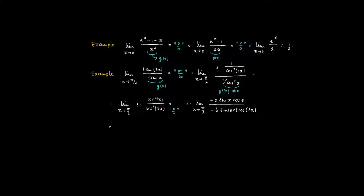Now we split the limits. The non-problematic parts are sin(x) and sin(3x), since these take normal values at π/2. So we write 3 times the limit as x goes to π/2 of minus 2·sin(x) divided by minus 6·sin(3x), times the limit as x goes to π/2 of cos(x) divided by cos(3x), provided this limit exists. You may only split into a product of limits if both of the limits exist.